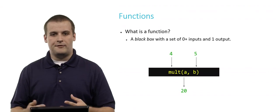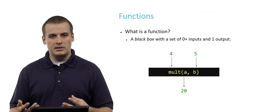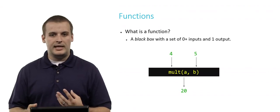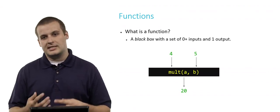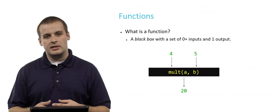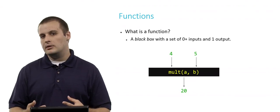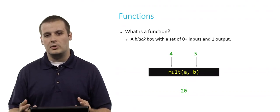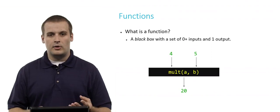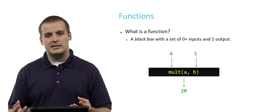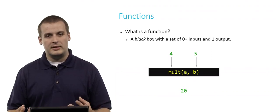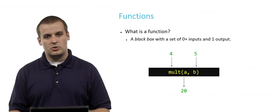Similarly, you have a function called mult that takes two inputs, a and b, and processes them such that the output of the function is the product of the two inputs — the two inputs multiplied together. Four and five being passed into mult — something happens — and the output we expect is 20.